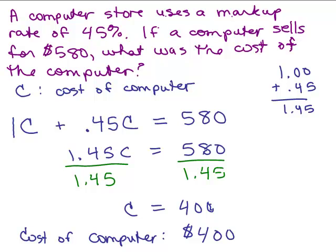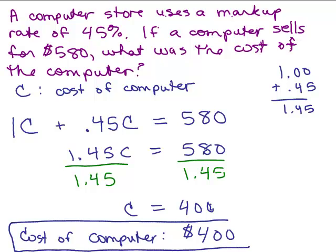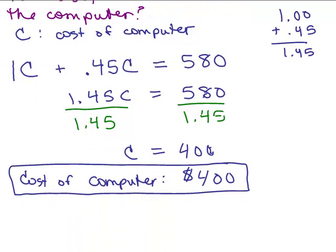Now you want to look and see if that seems reasonable given the information. What it says is they use a markup rate of 45%, and does that seem reasonable? Like 50% would mean you'd add half of 400 onto it, right? So if you bought something for $400 and it was 50%, you would add $200. It would sell for $600. But notice it's selling for $580. So it certainly looks like it's in the ballpark. So let's just double check.